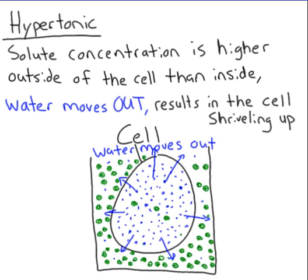The opposite situation is called hypertonic. Hypertonic is when the solute concentration is higher outside of the cell than inside. There's a lot of water molecules on the inside, and the water is going to move to the higher concentration of solutes outside. This results in water moving out of the cell, and then the cell shrivels up — it gets really tiny and deformed.